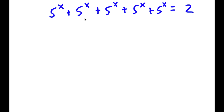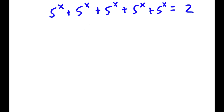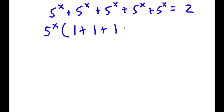The first thing I'm going to do is, because there are so many phi to the power of x's on the left hand side, I am going to simply factor out phi to the power of x. So now I have phi to the power of x times — phi to the power of x divided by phi to the power of x is obviously 1, because anything divided by itself is 1 — so I have 1 plus 1 plus 1 plus 1 plus 1, and this is equal to 2.